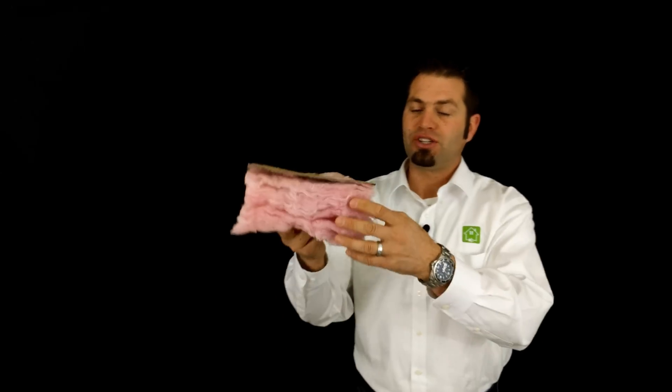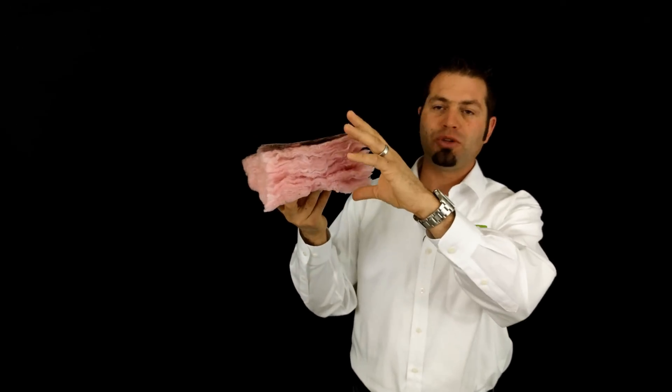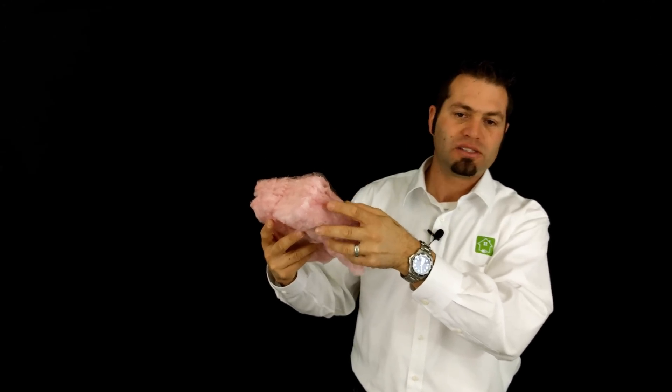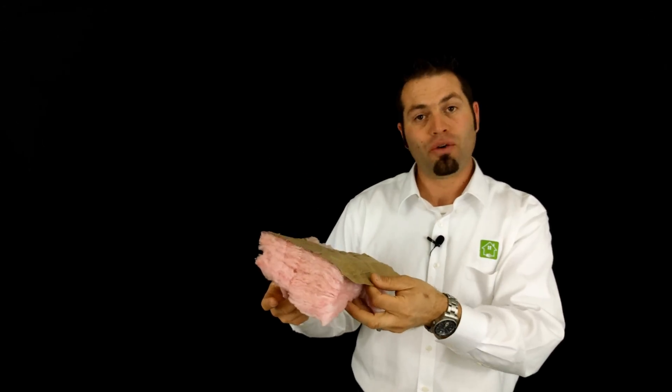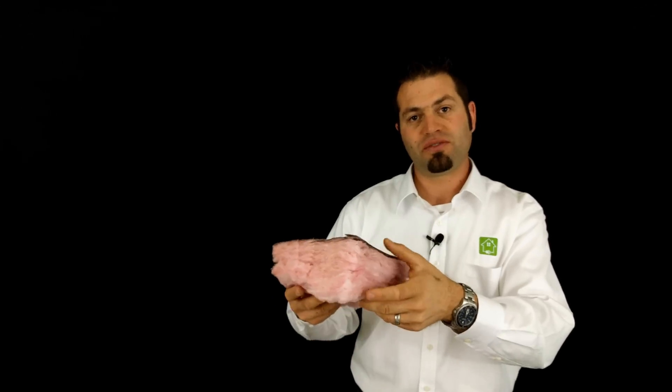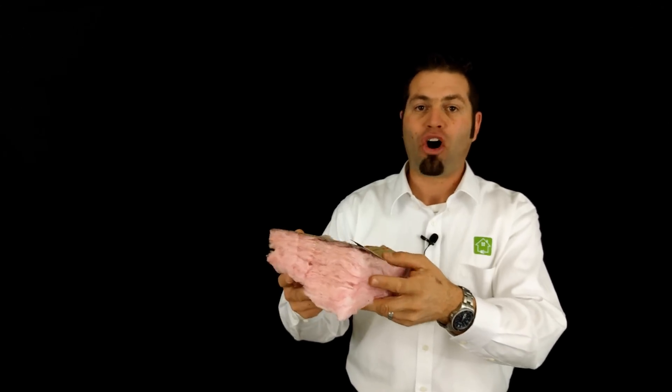This fiberglass insulation is an R13. This is what you'd see inside a wall cavity. It's about four inches thick and then gets slightly compressed, so it ends up being three and a half inches thick overall. This three and a half inches of insulation will be R13.